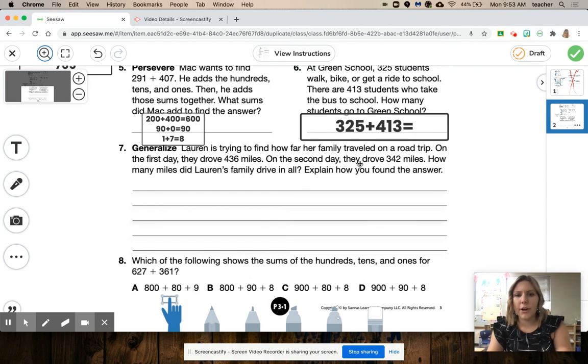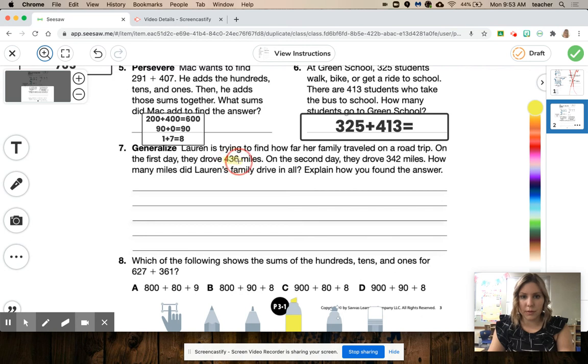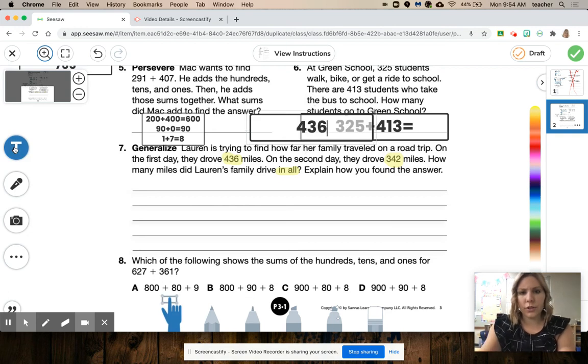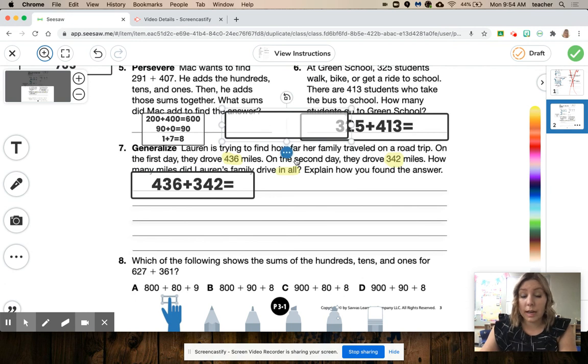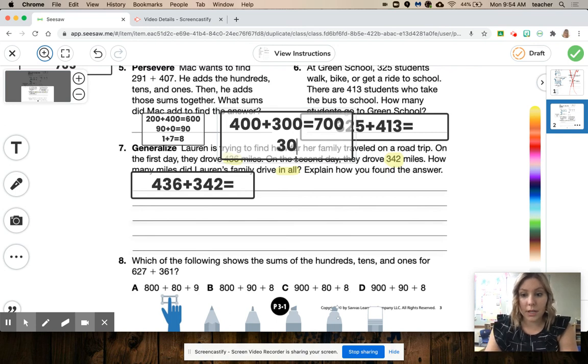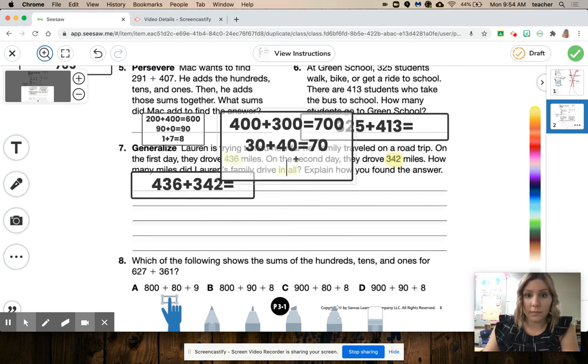Lauren's trying to find how far her family traveled on a road trip. On the first day, they drove 436 miles. So I'm going to highlight that number because sometimes these word problems, my numbers can get lost. The second day, they drove 342 miles. How many miles did they drive in all? And explain how you found that answer. So they added 436 plus 342. But it's asking how we got that answer. It just doesn't want the answer. So I'm going to use the expanded algorithm. 400 plus 300 equals 700. 30 plus 40 equals 70. And 6 plus 2 equals 8.